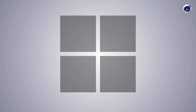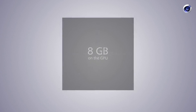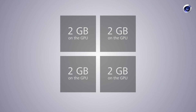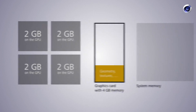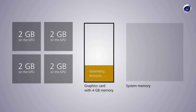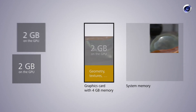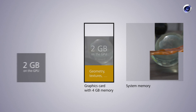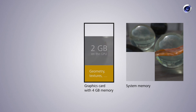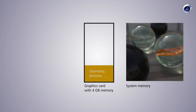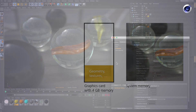The answer is bucket rendering. Bucket rendering splits the rendering into multiple parts. This decreases the amount of memory needed for rendering on the GPU and makes it possible to render at all. The resulting parts will be put back together in the system memory, which is usually much bigger than the memory of the graphics card.